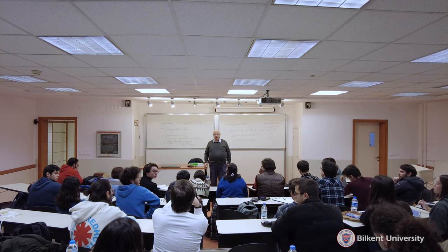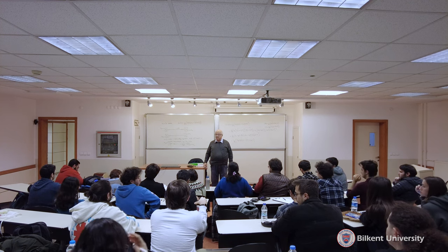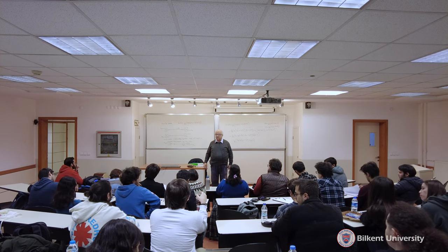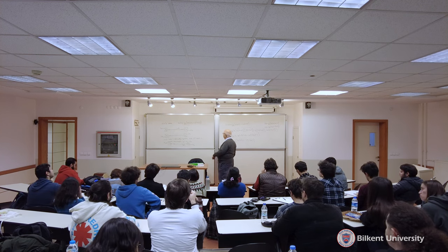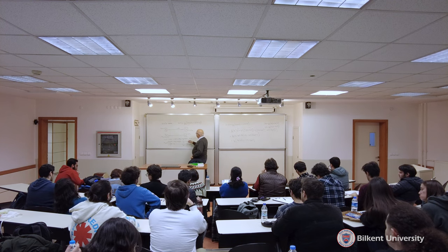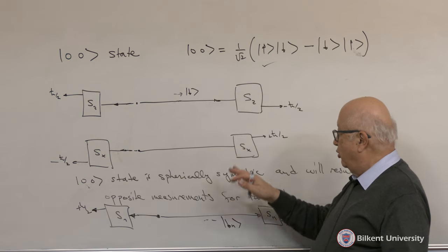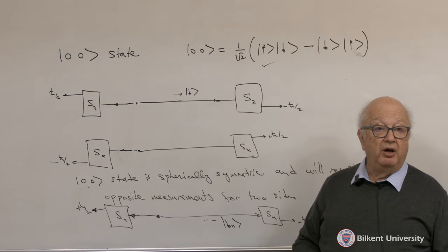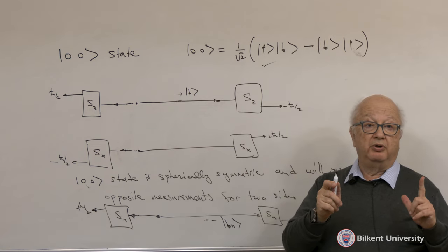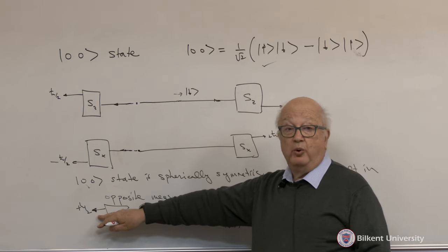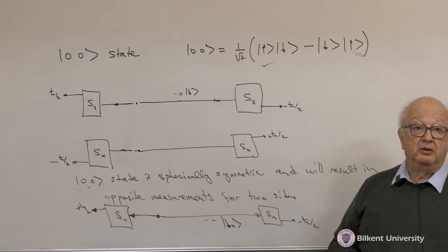A student asks: what does it mean to have opposite states? For instance, we have the singlet as |up⟩|down⟩ − |down⟩|up⟩, and the x expansion also ends up as |down_x⟩|up_x⟩ − |up_x⟩|down_x⟩. What does it mean to have these states with a negative sign? The answer is: as long as you measure the spin in the same direction on both sides — whether it is S_z, S_x, or any direction in space — whatever result you get on one side, you are going to get the opposite one on the other side.